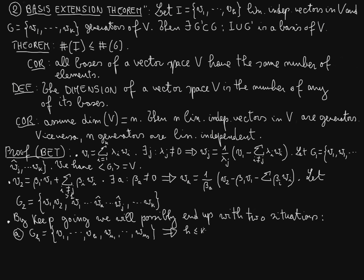So the number of elements in the linearly dependent vectors in I will always be less or equal than the number of generators, the number of elements in a set of generators of V. This we anticipated in the previous lecture. In this case we will end up this way.